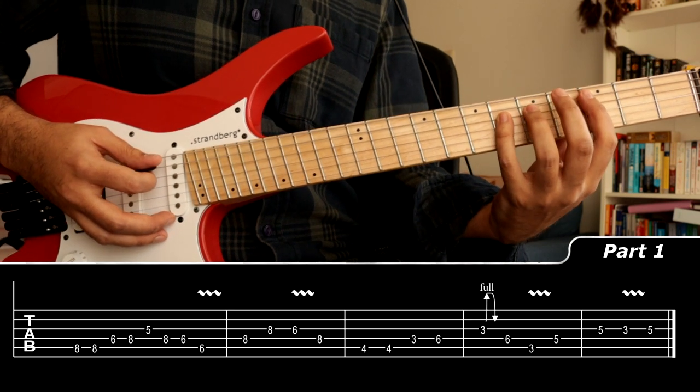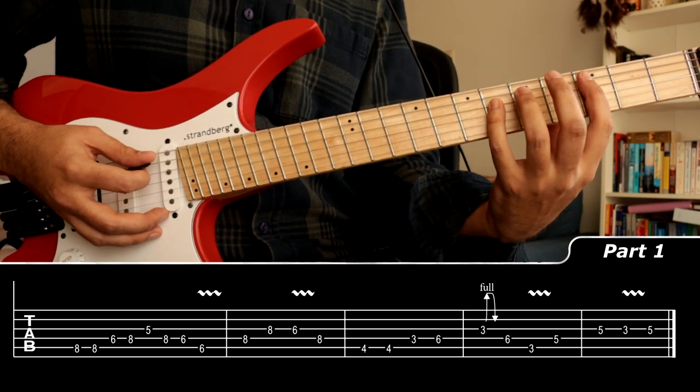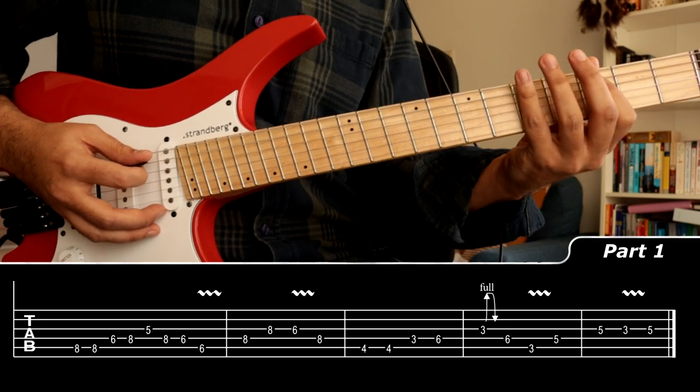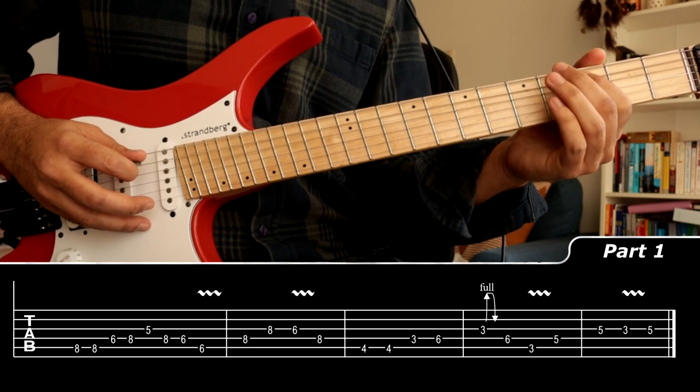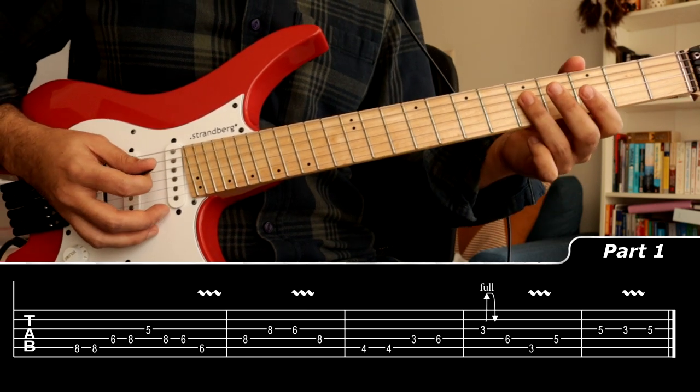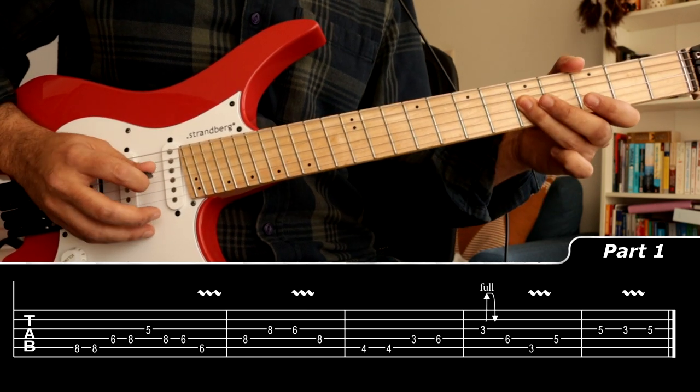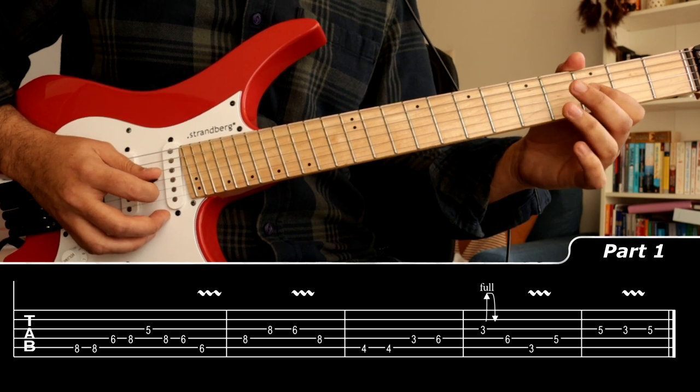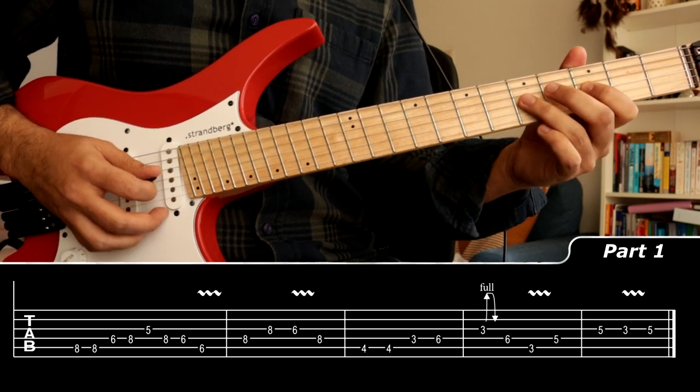And here we have the exact same pattern except lower onto the fretboard starting on the three with our index finger. Adding the bar on the fifth fret, playing five on the D and G. Go back to three on the G string, and five.